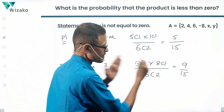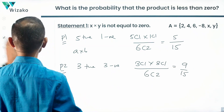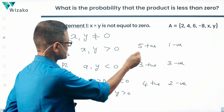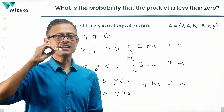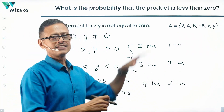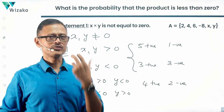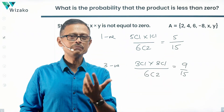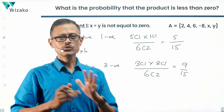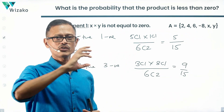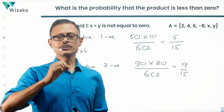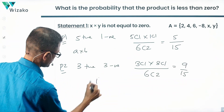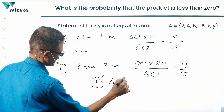We don't need to compute all three cases once we see that different configurations give different probabilities. At this stage you could conclude that Statement 1 does not give a unique value, and is therefore not sufficient. Statement 1 alone is not sufficient — rule out answer options A and D.